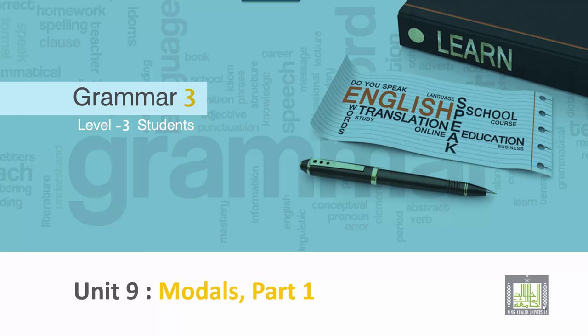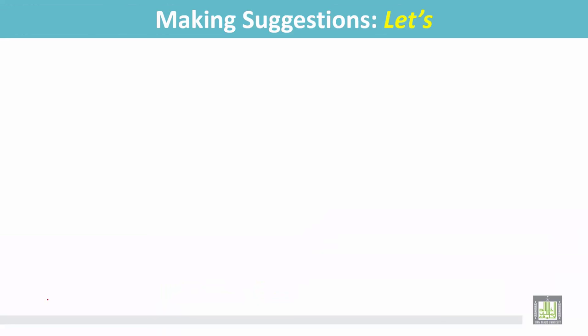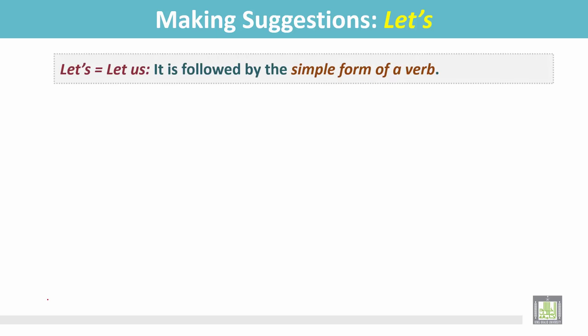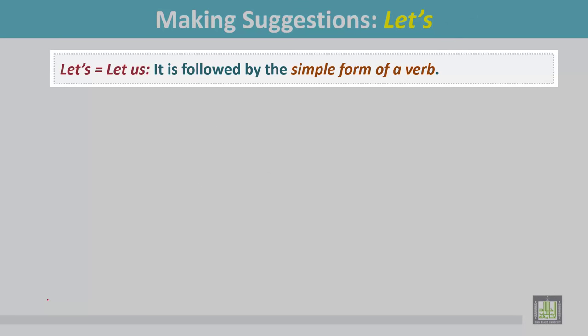Grammar 3 for level 3 students. Unit 9: Modals Part 1. Making suggestions. Let's means 'let us.' It is followed by the simple form of a verb and it is used for making a suggestion.